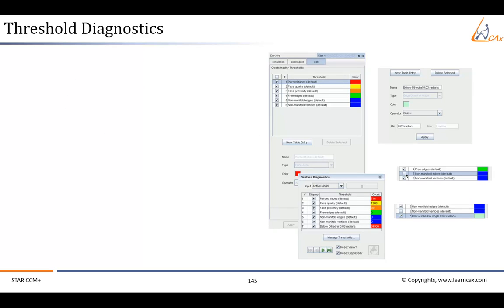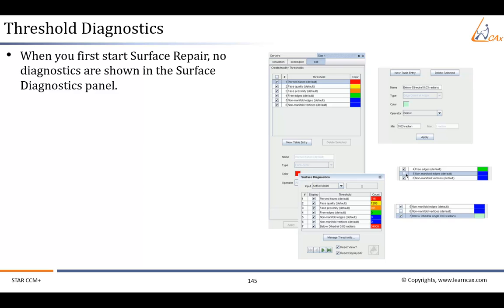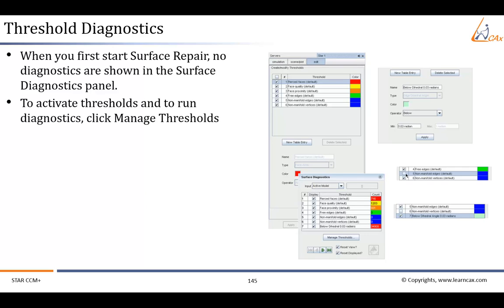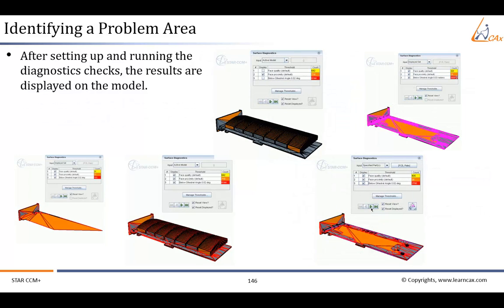Let us see how to perform each step in surface repair mode. The first step is to use threshold diagnostics. When you first start surface repair, no diagnostics are shown in the surface diagnostics panel. To activate thresholds and to run diagnostics, click 'Manage Thresholds'. The second step is to identify the problem area. After setting up and running the diagnostics checks, the results are displayed on the model.